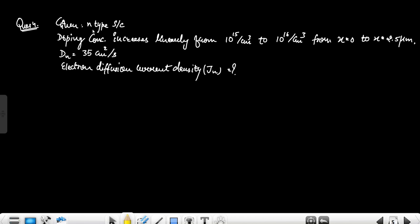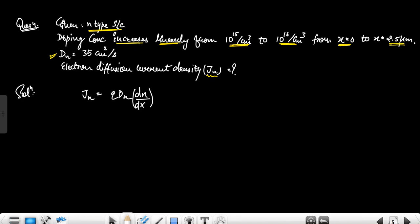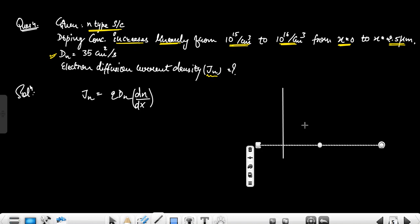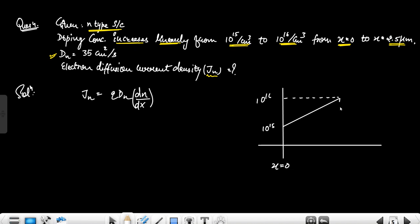The next question is about an N-type semiconductor where doping concentration increases linearly from 10^15 to 10^16 per cm³. The diffusion coefficient Dn is given as 35 cm²/s. The electron diffusion current density Jn uses the formula Jn = q·Dn·(dn/dx). Since the doping increases linearly, we can draw it as a straight line from 10^15 at x = 0 to 10^16 at x = 2.5 micrometers.